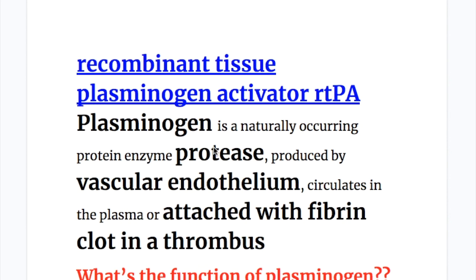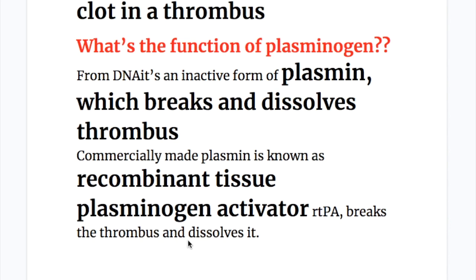What are recombinant tissue plasminogen activators? Plasminogen is a naturally occurring protein enzyme protease produced by vascular endothelium, which circulates in the plasma or is attached to fibrin clot in a thrombus. Plasminogen is an inactive form of plasmin, and plasmin breaks and dissolves the thrombus.